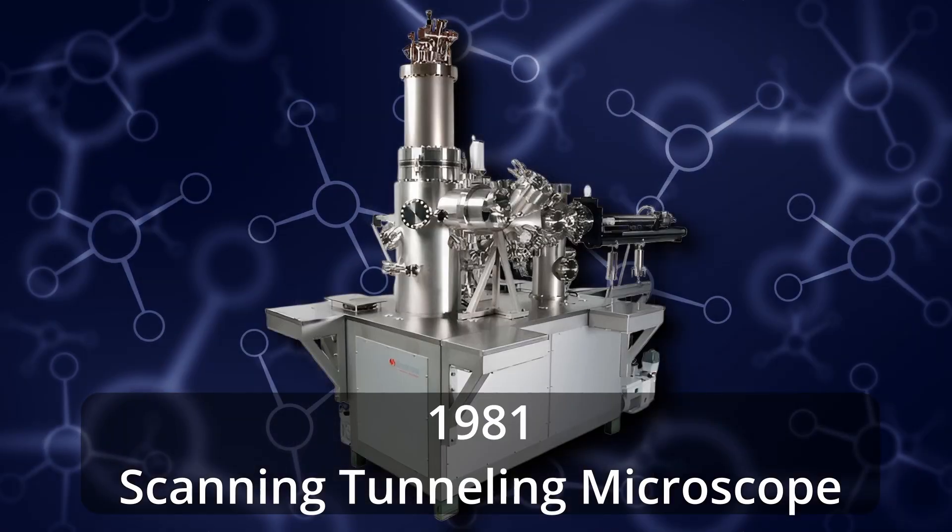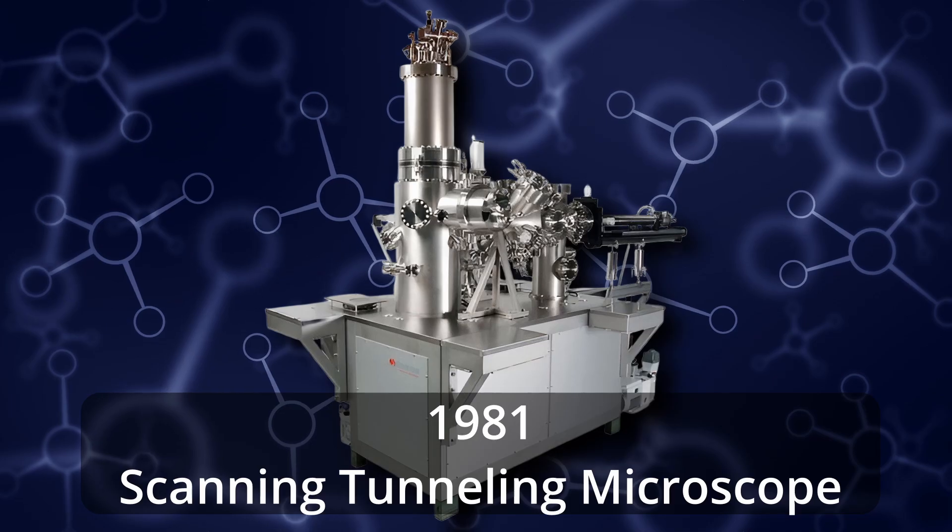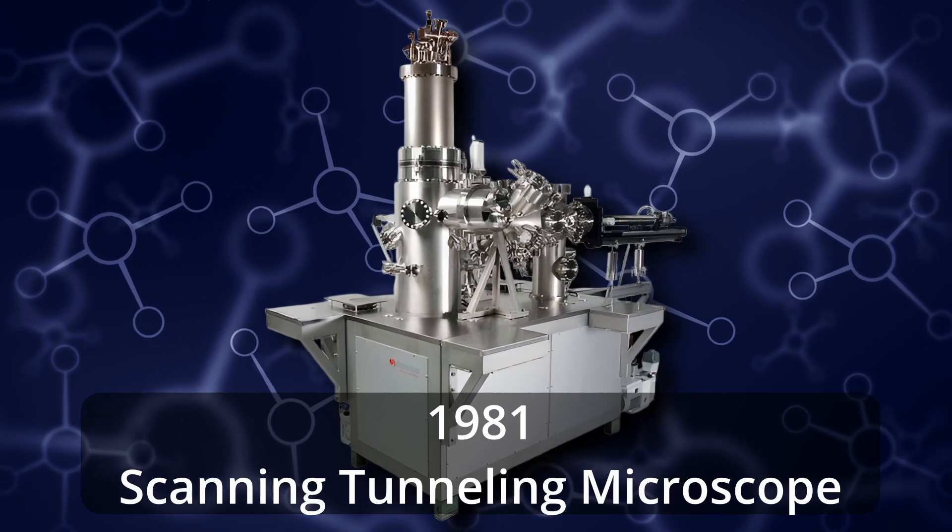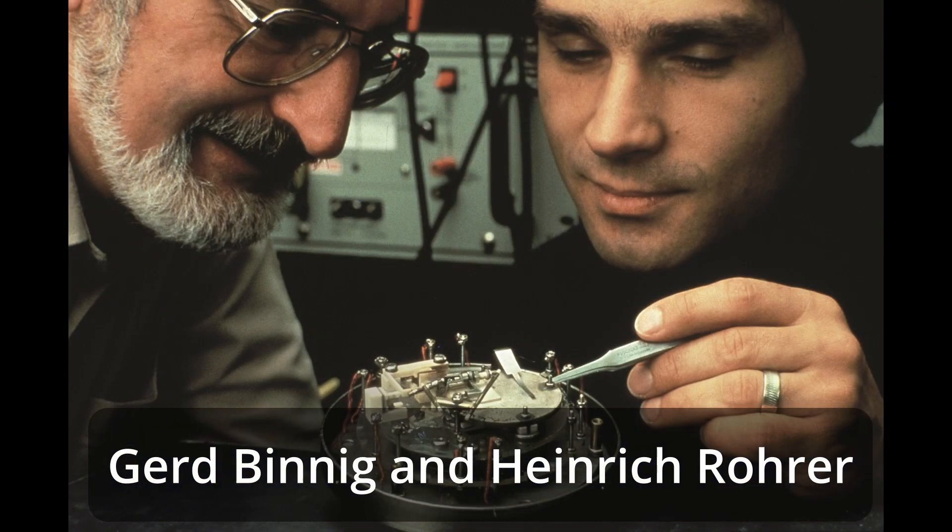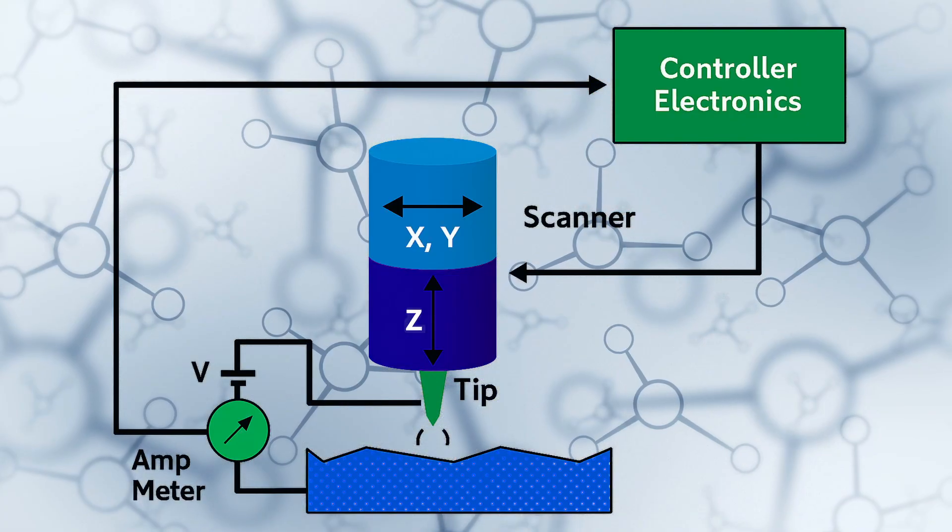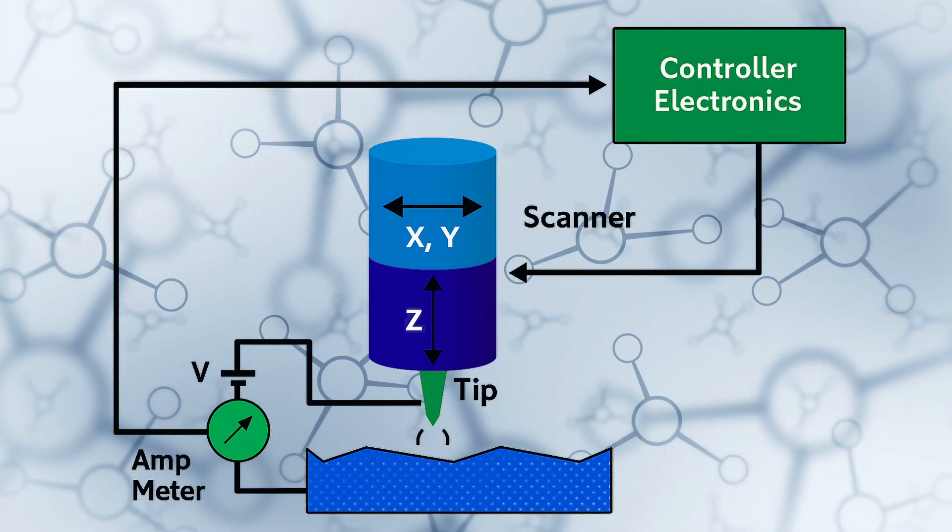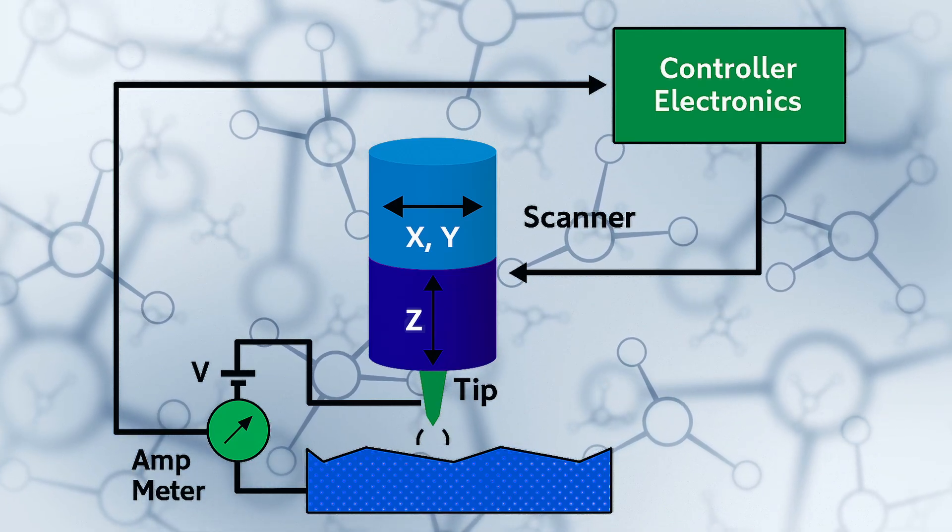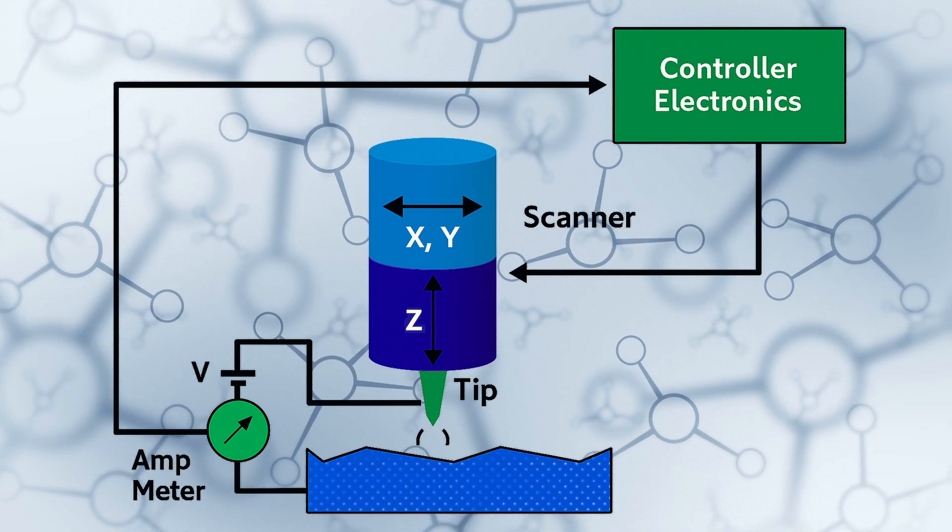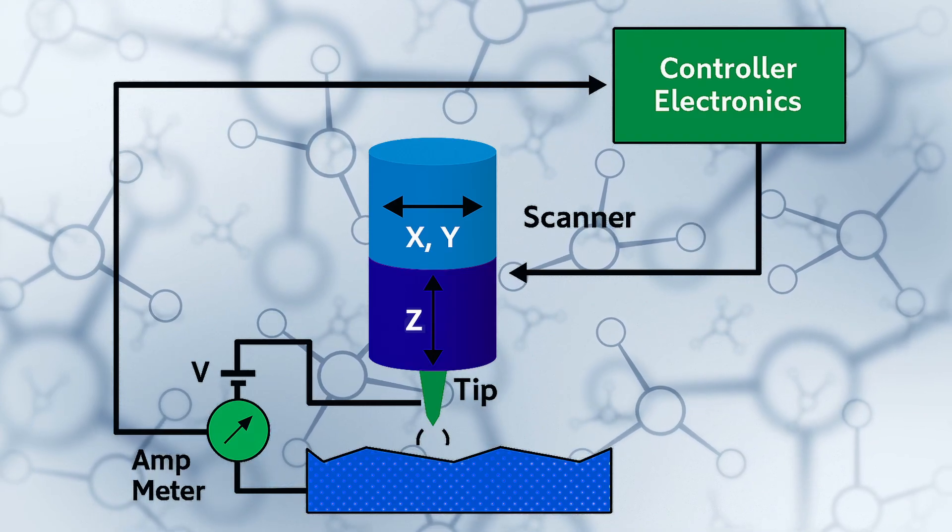But the real turning point came in 1981 with the development of the Scanning Tunneling Microscope, or STM. Its inventors, Gerd Binnig and Heinrich Rohrer, won the Nobel Prize for it. This instrument, which works by exploiting the tunnel effect, is our eye on the atomic world. Instead of using lenses, it uses an electric current to visualize and even move individual atoms.